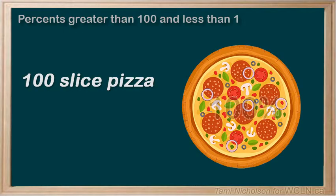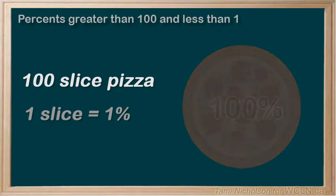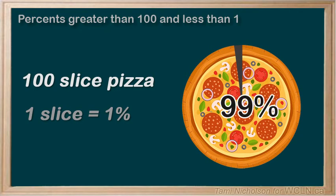If all 100 slices are there, you have 100% of the pizza, and each slice is worth 1%. If you eat one slice, 1%, then you have 99% of the pizza left.